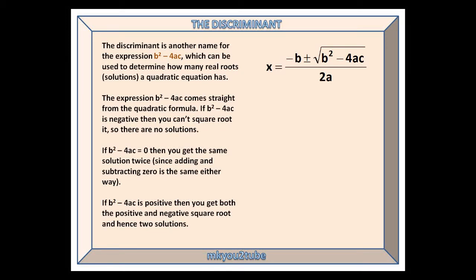The discriminant is another name for the expression b squared minus 4ac, which can be used to determine how many real roots, or solutions, a quadratic equation has.